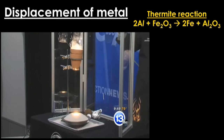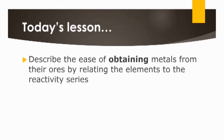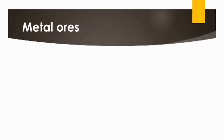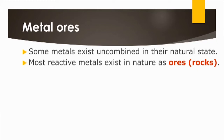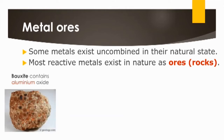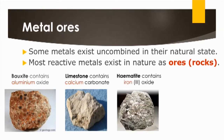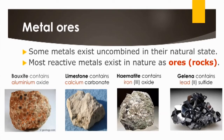For today's lesson, we'll focus on how the reactivity series determines the best method to extract different metals. Although some metals can exist uncombined in their natural state, most reactive metals exist in nature as ores — rocks in which metal minerals are found. Examples include bauxite, which contains aluminum oxide; limestone, which contains calcium carbonate; hematite, which contains iron(III) oxide; and galena, which contains lead(II) sulfide.